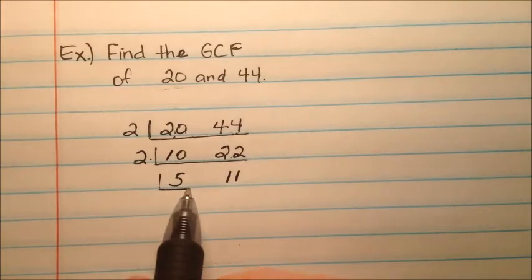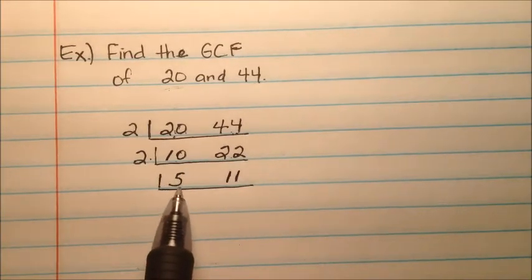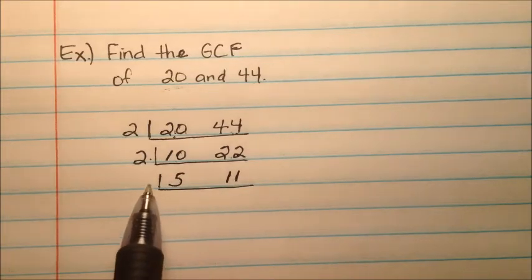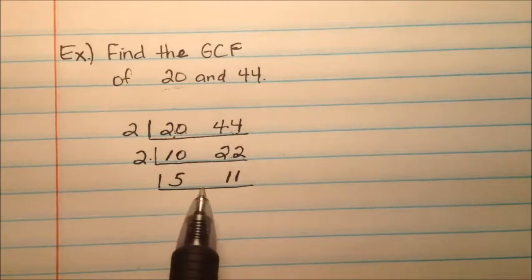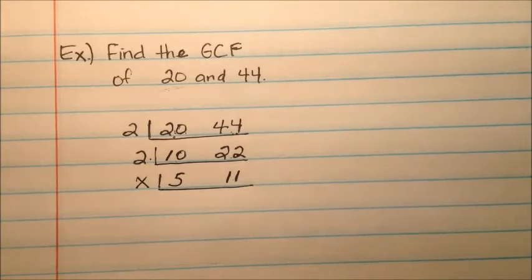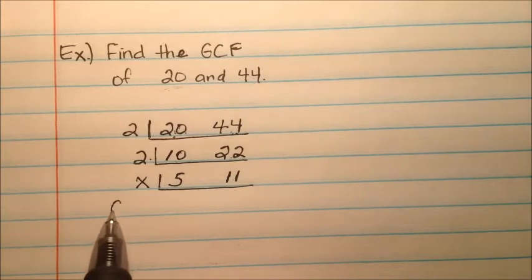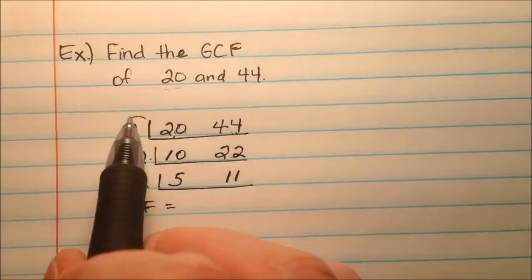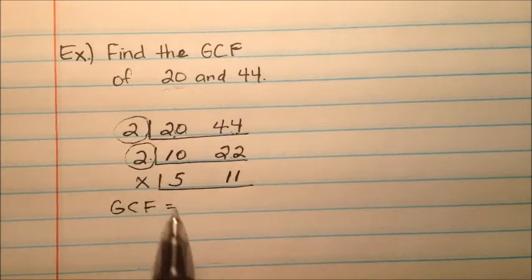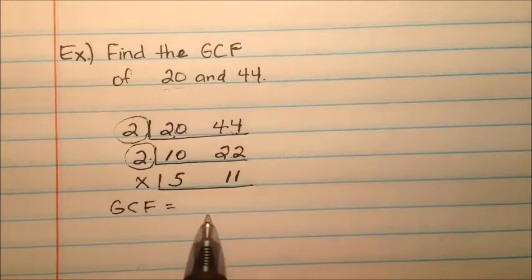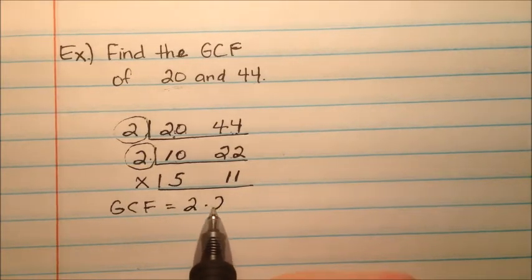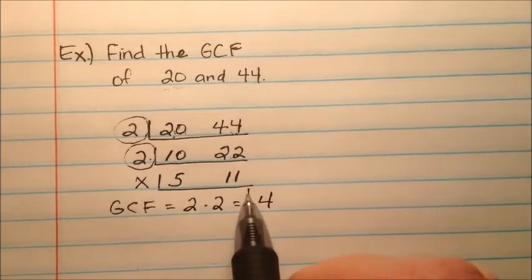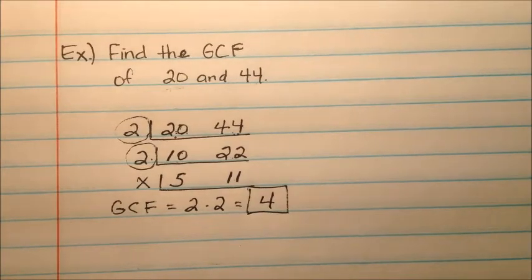Is there another number that divides both 5 and 11 evenly? There's not, so I know I'm done. My GCF is going to be the product of all the numbers I pulled out. I pulled out a 2 and a 2, so my GCF is going to be 4.